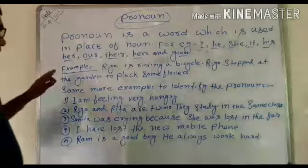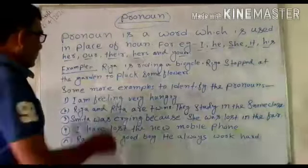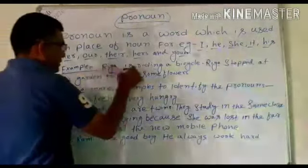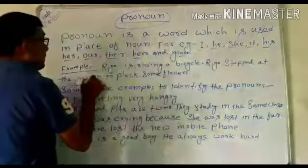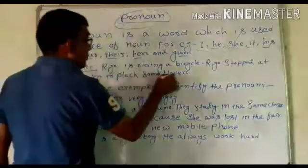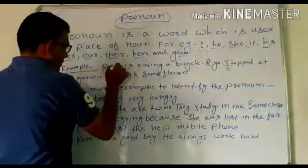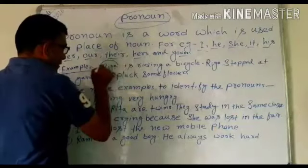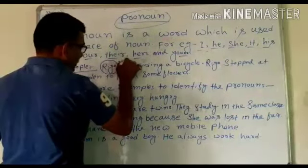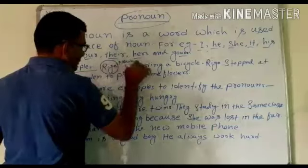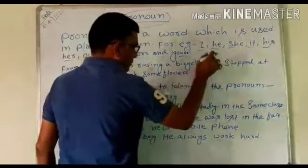Here is an example. Riya is riding a bicycle. Riya stopped at the garden to pluck some flowers. So you look — here, Riya is a noun. And here also, Riya is a noun.